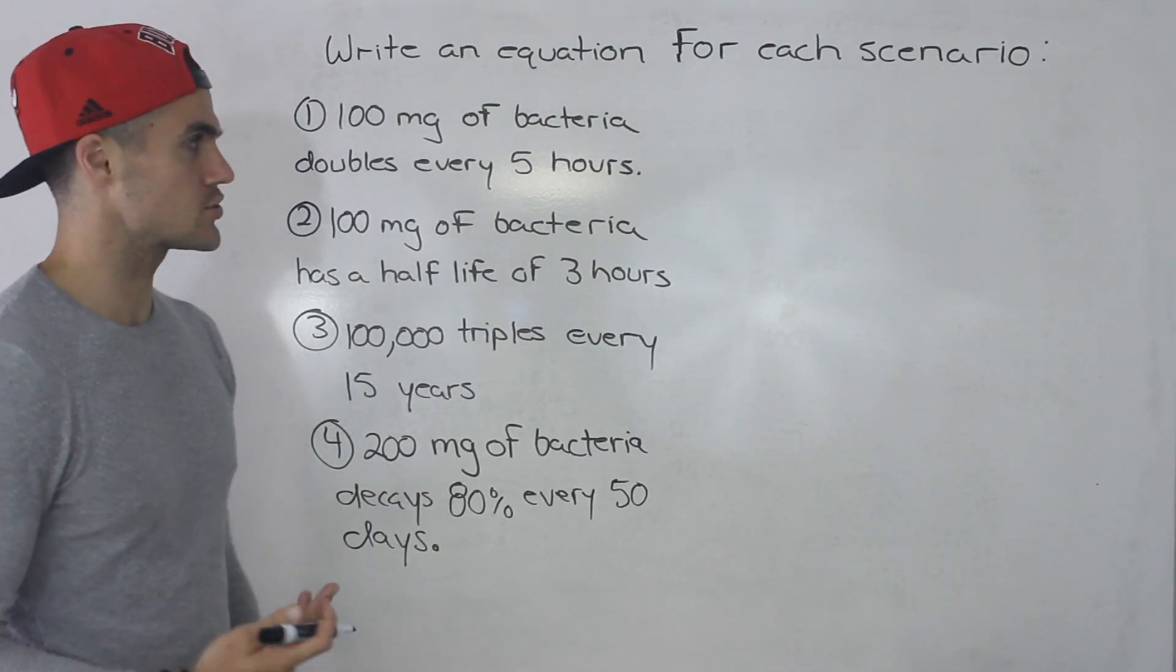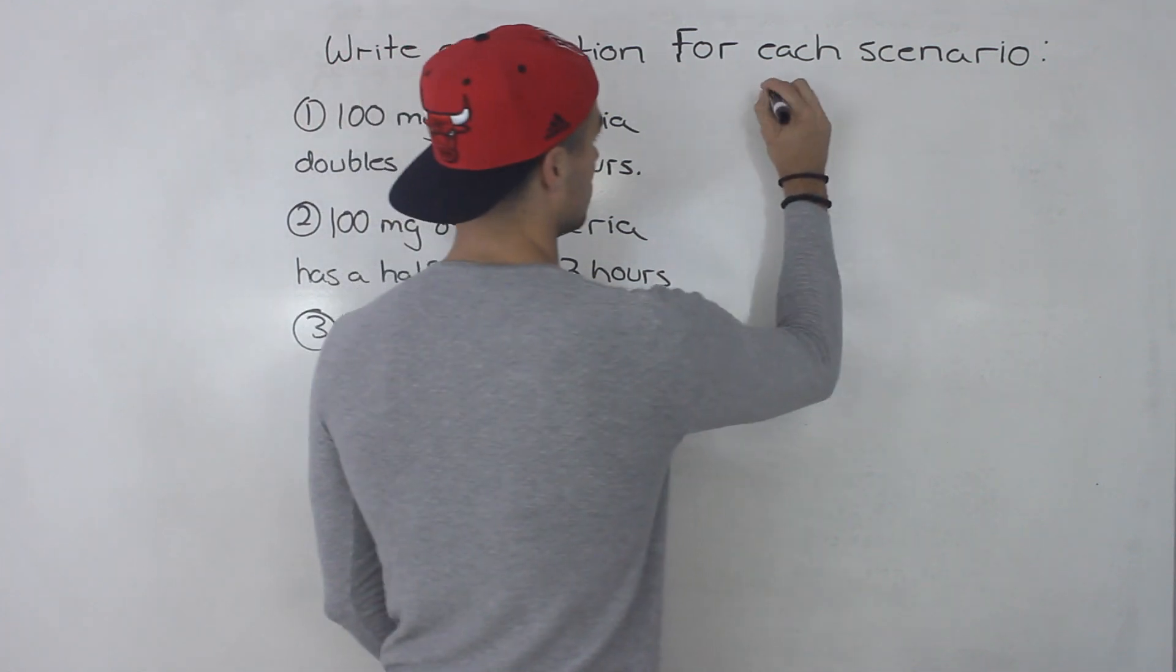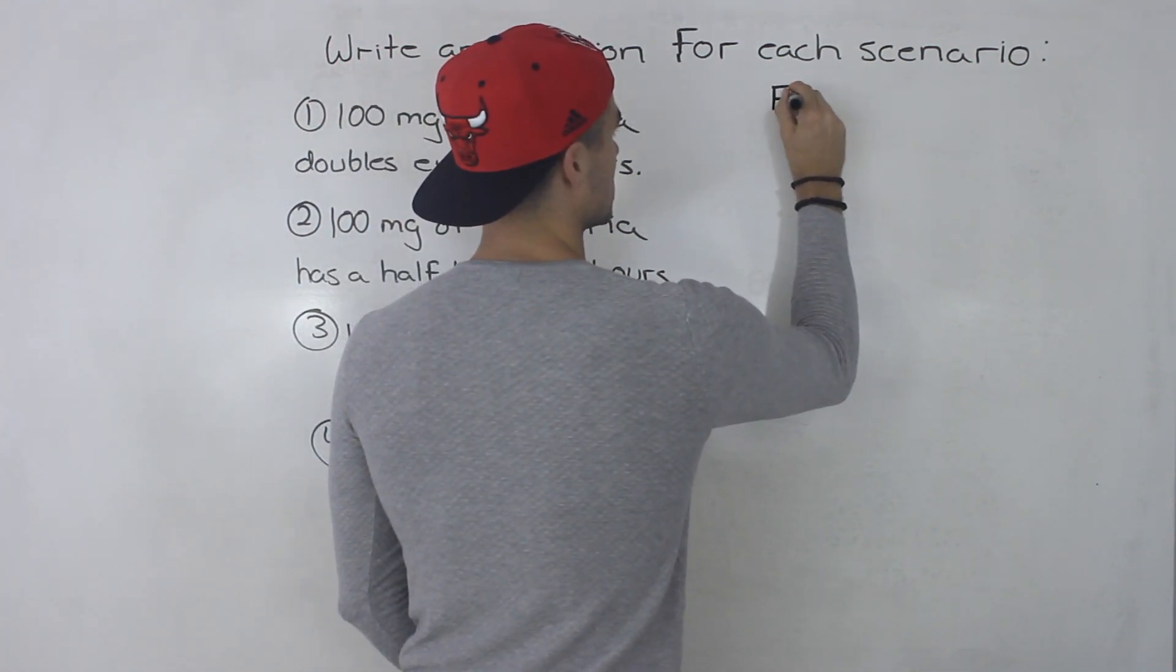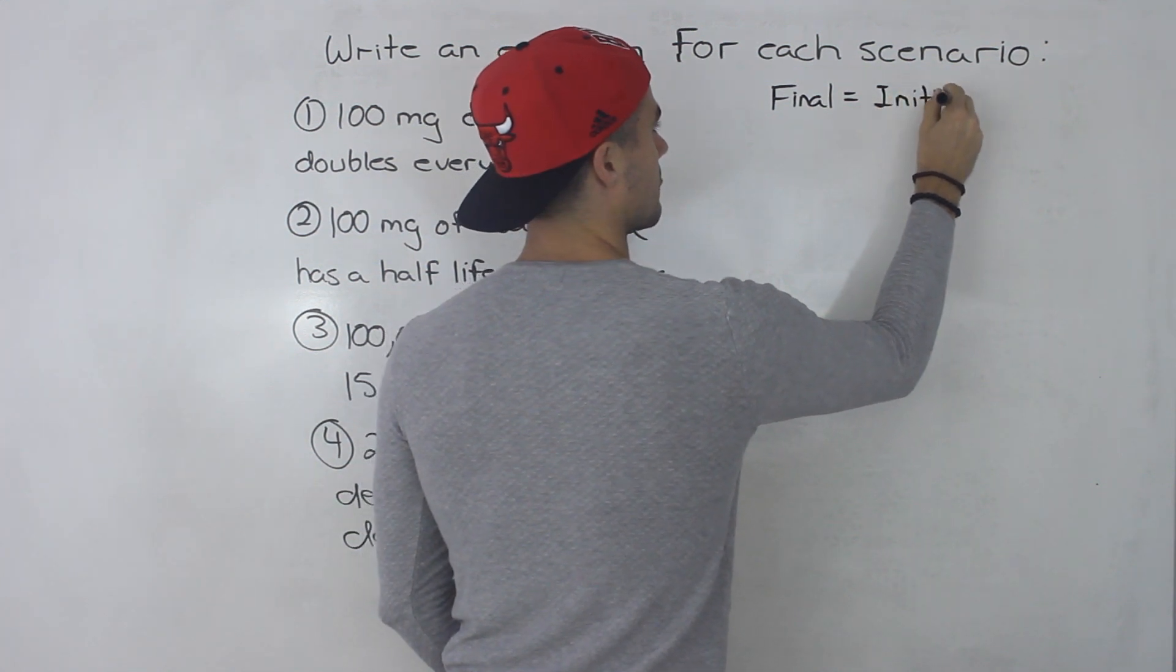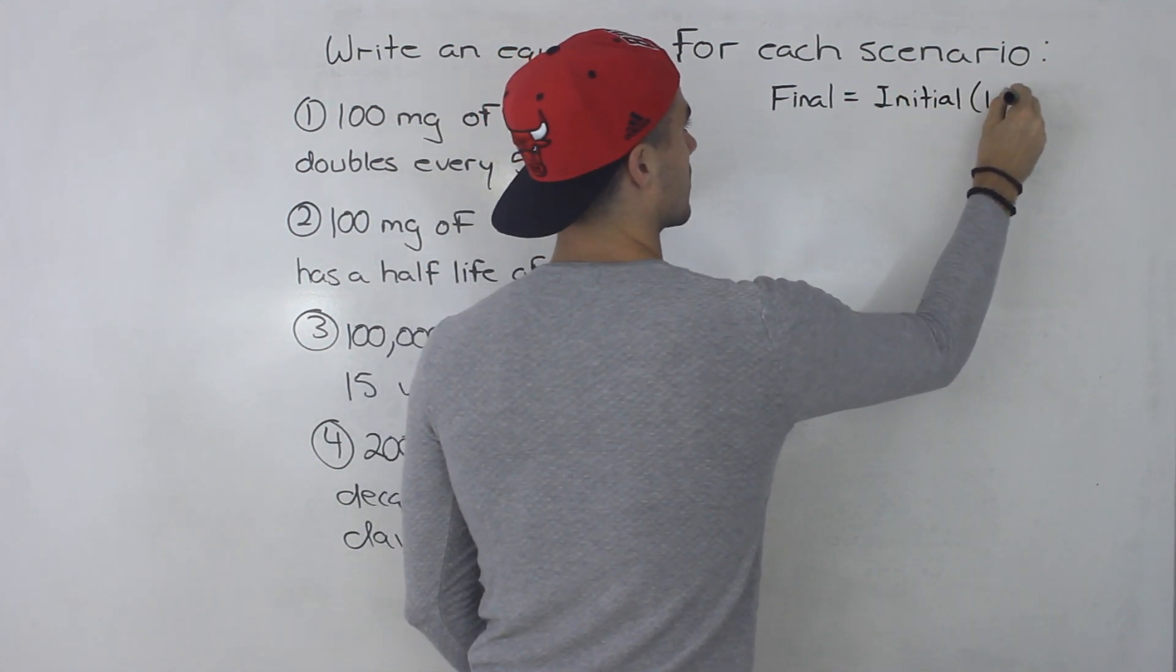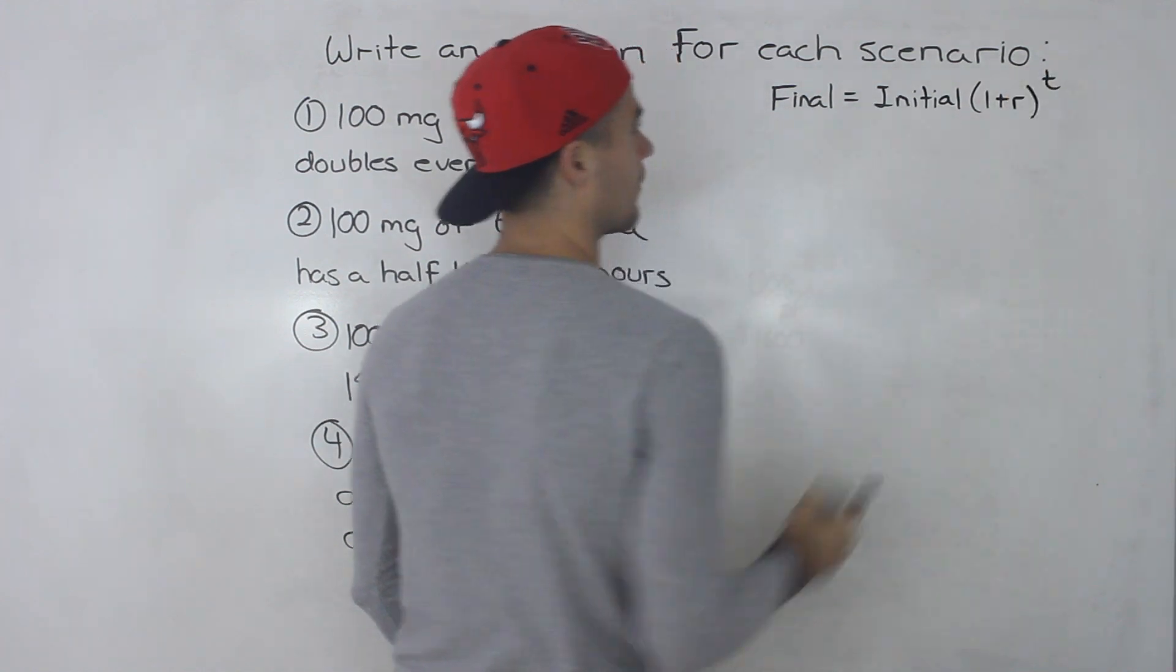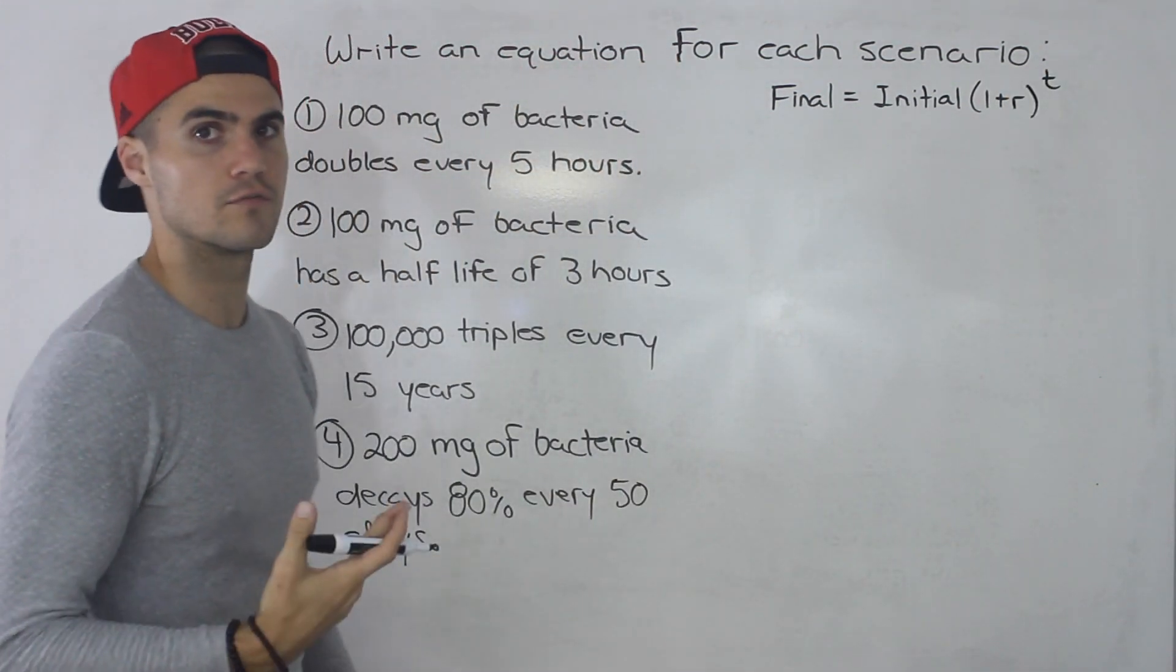So these are going to be exponential scenarios and we know so far we've been dealing with this formula that final amount is equal to an initial amount times (1+r) to the power of t, number of periods.